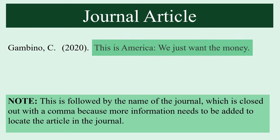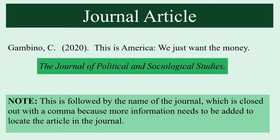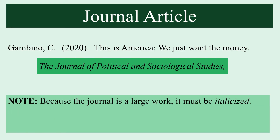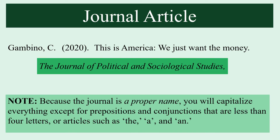The article title is followed by the name of the journal, which is closed out with a comma rather than a period because we still need to add information to locate the article within the journal. There are some formatting differences: the journal is the larger work, so it must be italicized, in contrast with the article title which is not. Likewise, the journal's name is a proper name, so you capitalize everything except prepositions and conjunctions less than four letters, or the words 'the,' 'at,' and 'an,' unless they're at the beginning of the title.